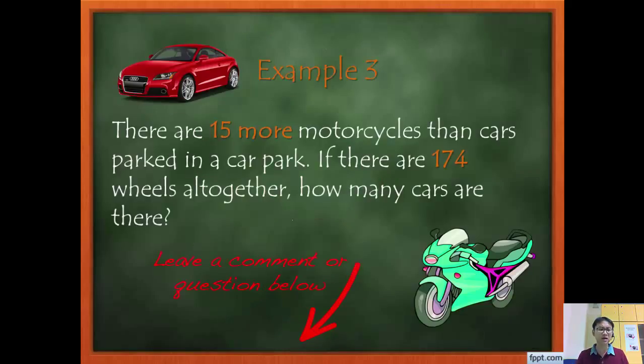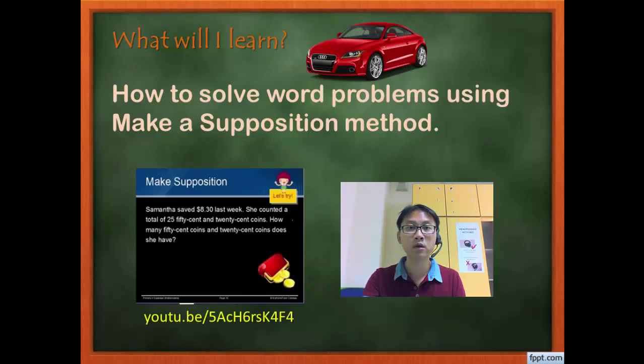Now let's look at this example. This was the second example that was shown in the guess and check method. There are 15 more motorcycles, except 174 wheels altogether. Can we use make a supposition for this method? I want you to think through it carefully and leave your comments in the Google Forms embedded below this video. Okay, so you need to get out of this video, scroll down, go to the Google Form, and type in your response. Okay, and then we'll discuss this back in class.